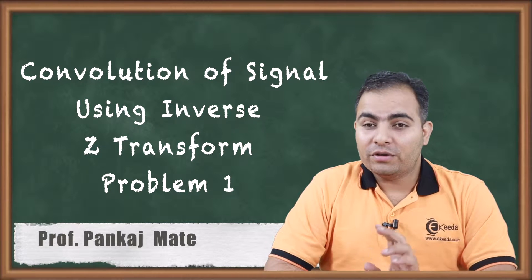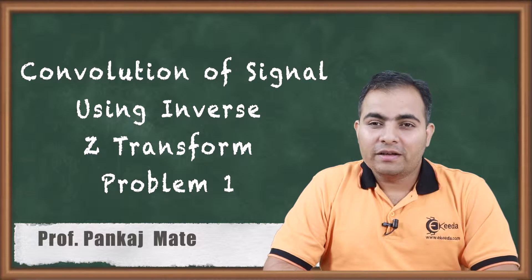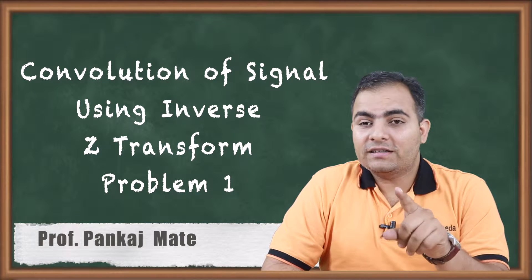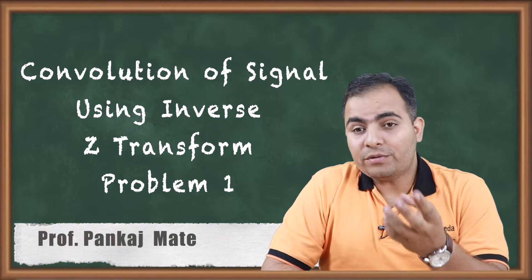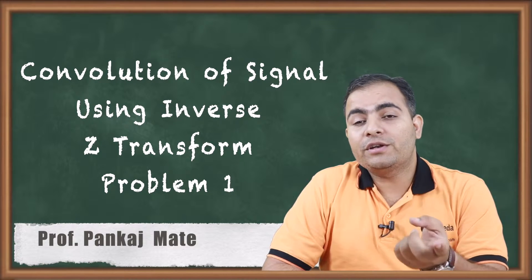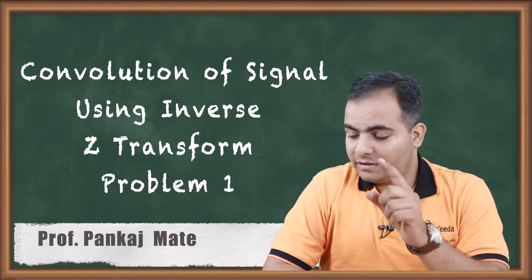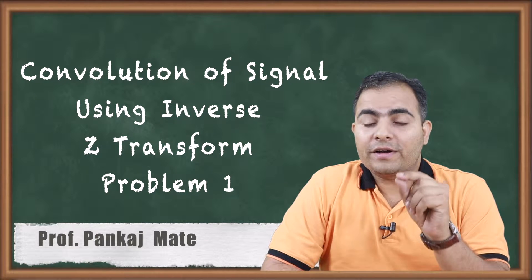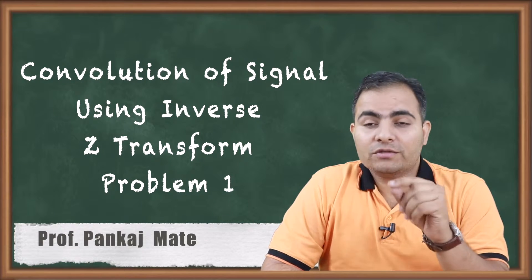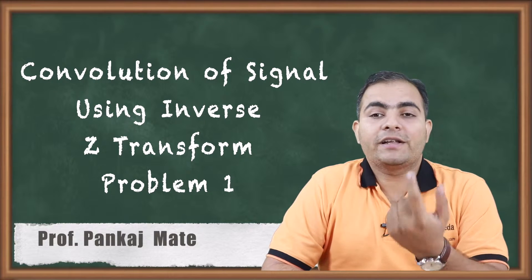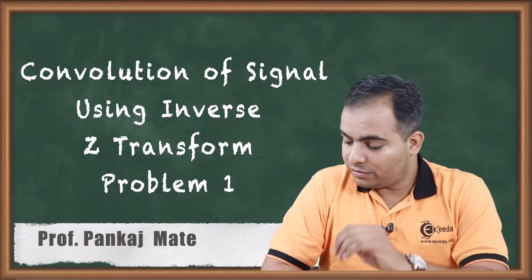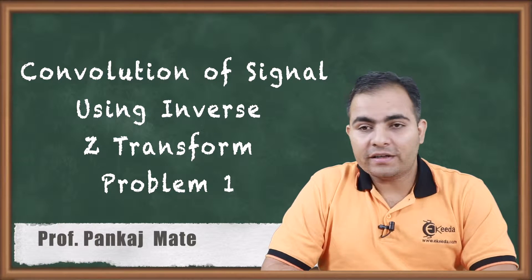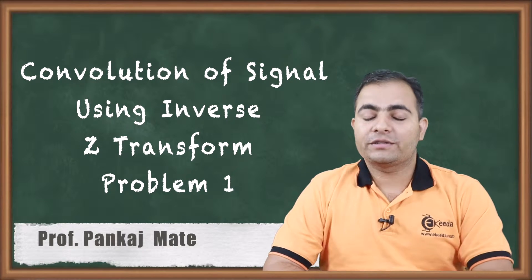You should know the convolution theorem. When two signals convolve with each other and you want to transform that convolution into a domain like the Z-domain, we will first find the Z-transform of both functions and then multiply them with each other. This is our main concept. Now we will apply the convolution theorem to the question.